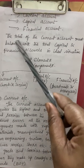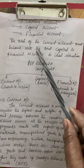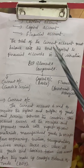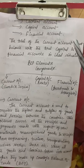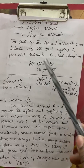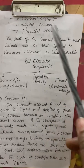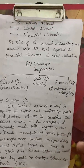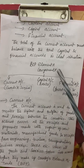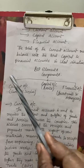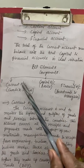The total of the current account must be balanced with the total capital account, and if you add the total capital account and financial account, it must be equal to the current account in the ideal situation. BOP main components can be divided into three categories: current account, capital account, and financial account.